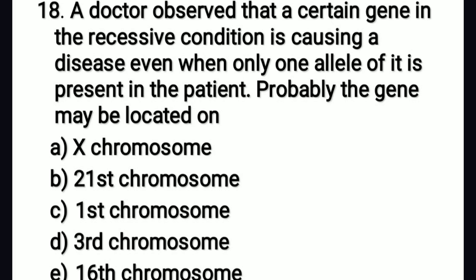A doctor observed that a certain gene in the recessive condition is causing a disease even when only one allele is present in the patient. Probably the gene may be located on: the right answer is option A — the X chromosome. In human males, a sex-linked recessive trait expresses under hemizygous condition, meaning one allele is enough to express the trait.